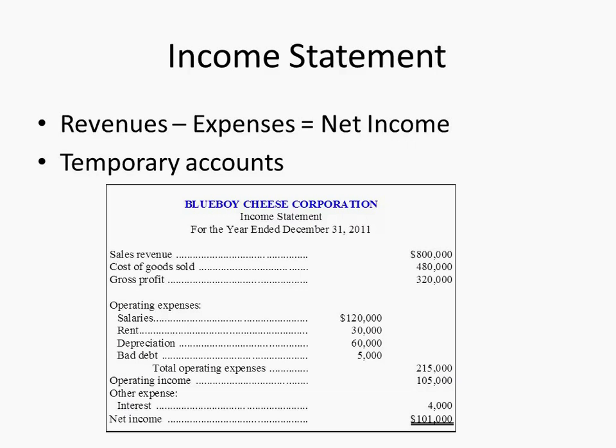Peachtree and QuickBooks are very commonly used but simple systems. What we're talking about are large enterprise systems common in big corporations. QuickBooks and Peachtree are mid-range off-the-shelf systems — great for small businesses, but they don't have the controls that large systems have. In large systems, you can't just reverse or change entries the way you can in smaller systems.